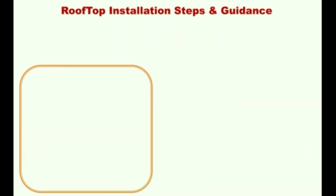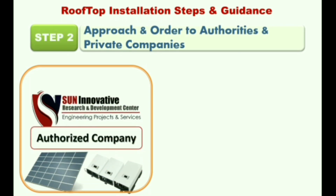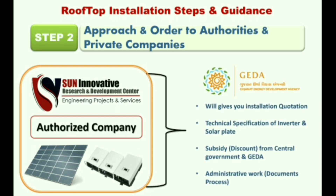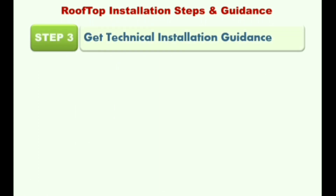Step 2 is to approach and order from authorized and private companies. For example, our company provides solar rooftop plants in the Gujarat location with subsidy and discount rates. This company will provide you the full document process and approval from the government.